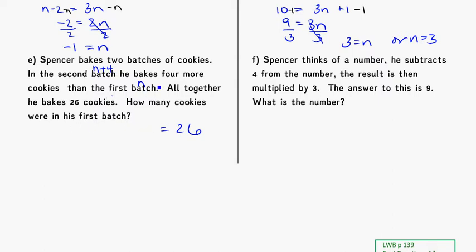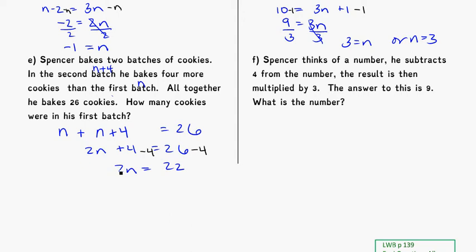So: N plus (N plus 4) equals 26. Simplifying, 2N plus 4 is equal to 26. Subtract 4 from both sides: 2N equals 22. Divide by 2 on both sides: N equals 11 cookies. The first batch is N, and the second batch is N plus 4 — 4 more — and altogether it's 26.